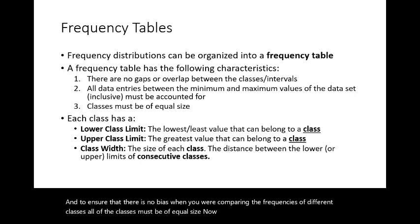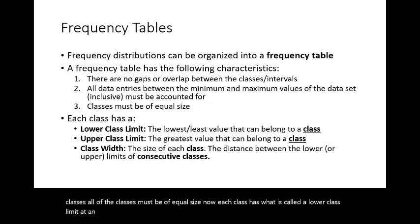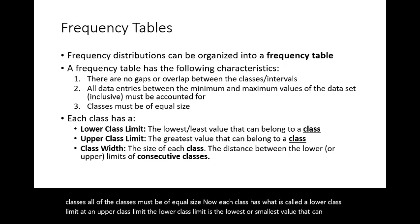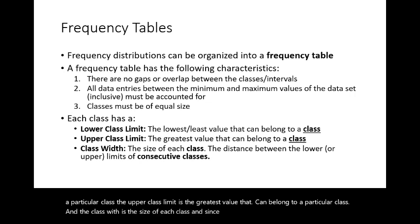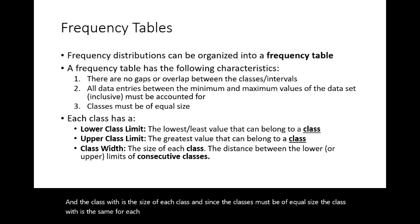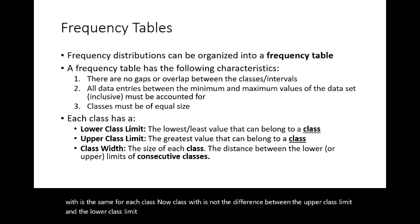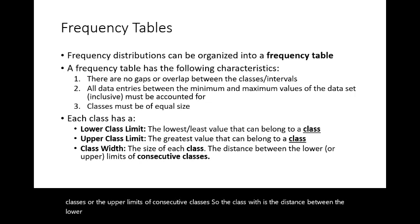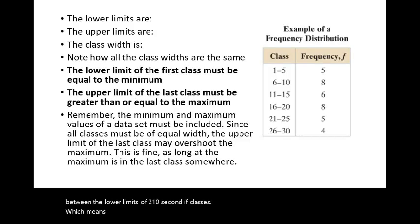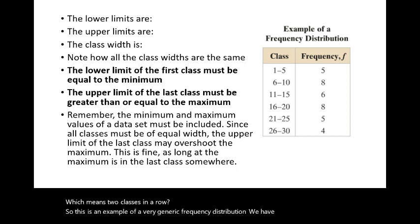Each class has a lower class limit — the smallest value that can belong to that class — and an upper class limit — the greatest value. The class width is the size of each class and is the same for all classes. Class width is not the difference between the upper and lower class limits of the same class; it is the distance between the lower limits of consecutive classes, or the upper limits of consecutive classes.